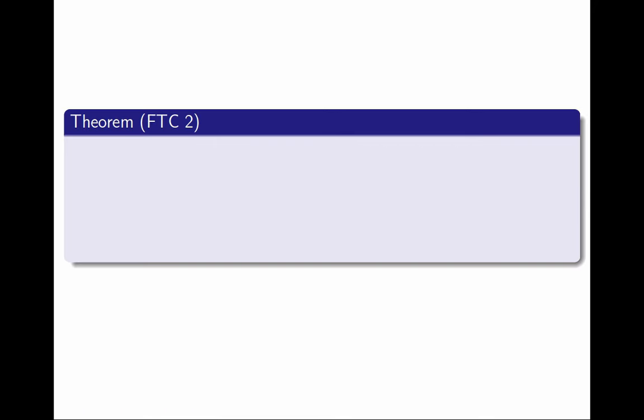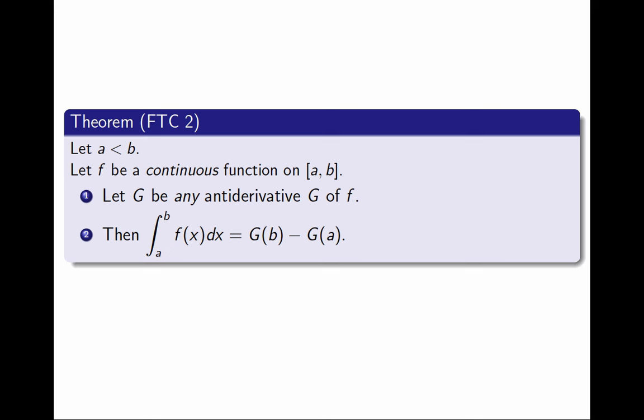As a reminder, here's what the theorem says. I begin with a function f that must be continuous on an interval a, b, and I want to compute its definite integral. The theorem says that if I take any antiderivative g, then the definite integral of f from a to b is the antiderivative at b minus the antiderivative at a. That's what we want to prove.